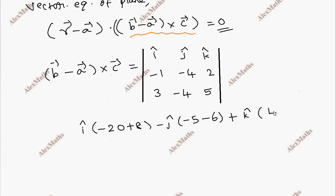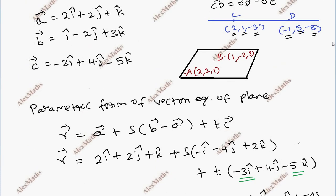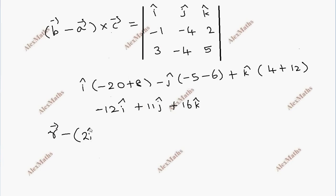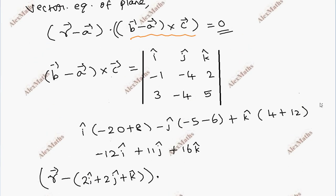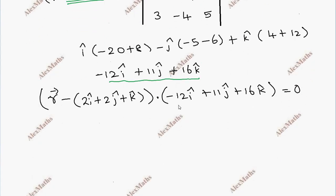Computing the determinant gives us the normal vector: minus 12i plus 11j plus 16k. So (R vector minus a vector) dot (minus 12i plus 11j plus 16k) equals zero, where a is 2i plus 2j plus k.